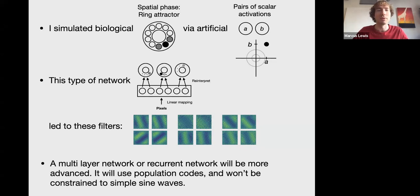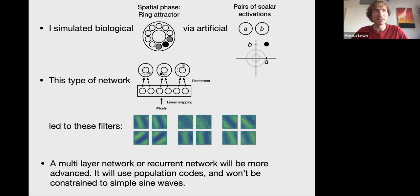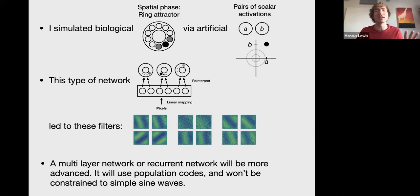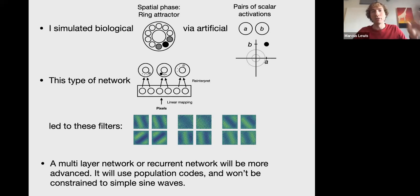To review: one thing I did that may have seemed a little weird was choosing to simulate these biological rings using pairs of units. My philosophy is that artificial units in neural networks are already not neurons — they're already non-biological. If you draw an analogy between neural networks and biological neural networks, it's unlikely that the right connection is that a neuron maps to a neuron. So I decided to embrace that and model an entire ring of neurons using a pair of activations that can be positive or negative.